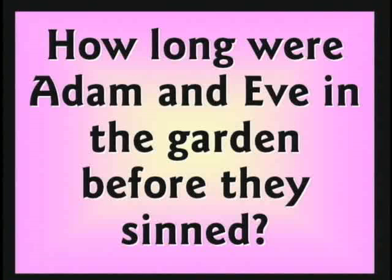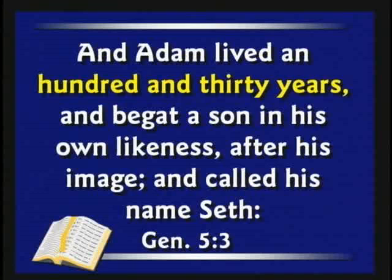How long were Adam and Eve in the garden before they sinned? All I can do is give you a couple of clues from Scripture. Genesis 5 says Adam lived 130 years and begat a son named Seth. Before this time they had Cain and Abel — no dates are given. Before that they were kicked out of the garden. So probably the maximum time they could have been in the garden is around 120 years. We know everything was fine at the end of day 6 — so Lucifer had not fallen yet and Adam and Eve were still in the garden.